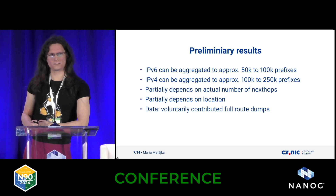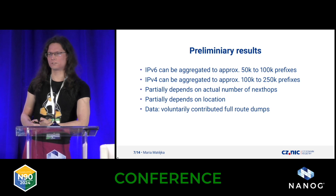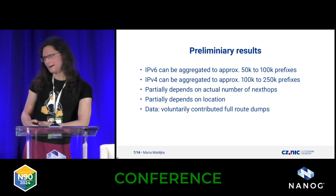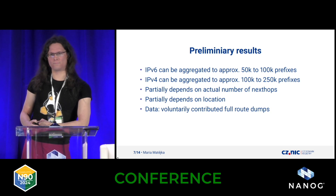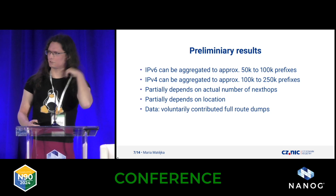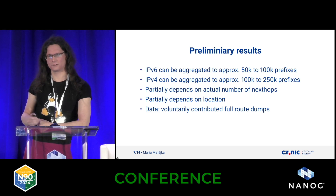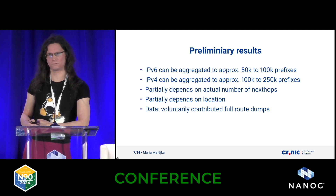Once on Christmas — it was the 25th of December — I got nerd-sniped into writing this in Python, and I wrote it completely standalone. After trying this on one dump, I found out that IPv6 can be aggregated to something between 50,000 and 100,000 prefixes. Now you remember there are like 200,000.